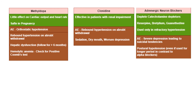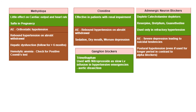Adrenergic neuron blockers — reserpine, bretylium, and guanethidine — deplete catecholamines in adrenergic neurons and are used only in refractory hypertension. Adverse effects include severe depression leading to suicidal tendencies, and postural hypotension that persists even on prolonged use (unlike alpha blockers, where postural hypotension attenuates over time). Ganglionic blockers such as trimethaphan are used with sodium nitroprusside as a slow IV infusion in hypotensive emergencies, particularly in dissection of the aorta.